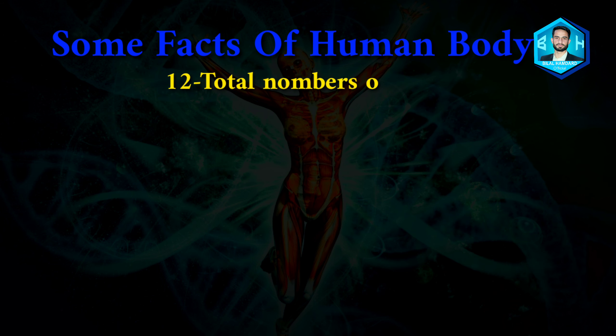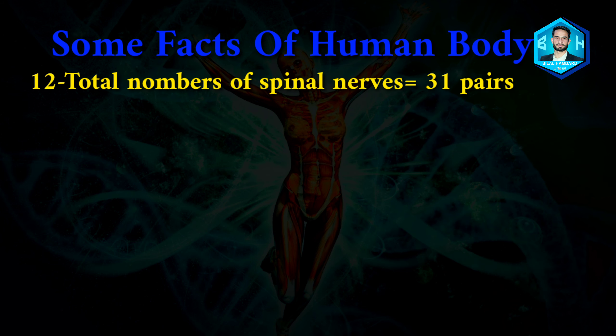Number twelve: total number of spinal nerves is 31 pairs.